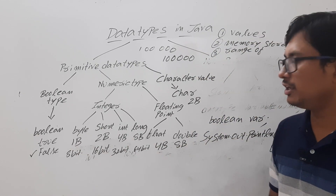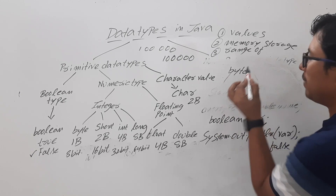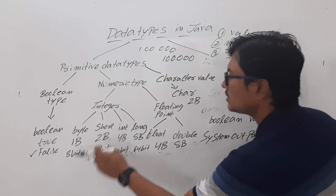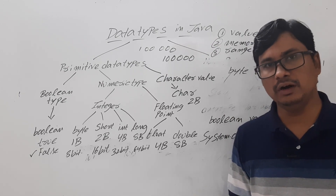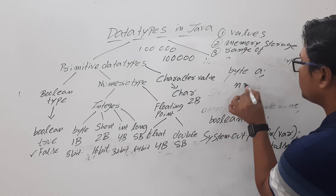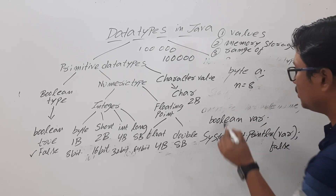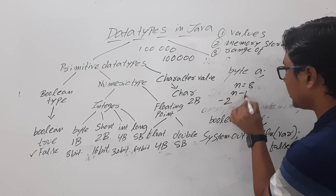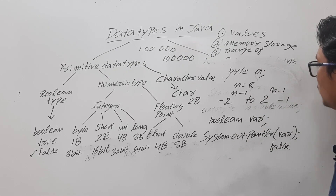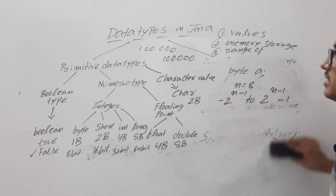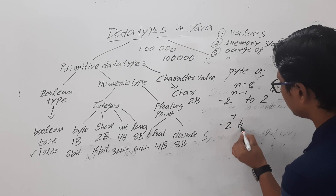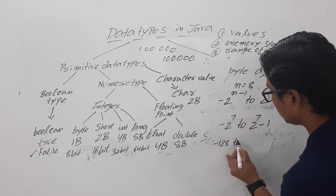Now let me discuss how to declare a byte variable: you use the keyword byte followed by the variable name, for example byte a. What are the range of values you can hold? Since byte is 8 bits, n equals 8. In two's complement representation, you can store from minus 2 to the power n minus 1 to 2 to the power n minus 1 minus 1. With n equals 8, that is minus 2 to the power 7 to 2 to the power 7 minus 1, which is minus 128 to 127.